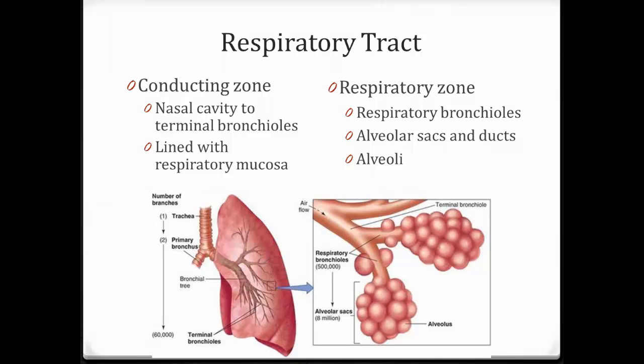We can also divide the respiratory tract into conducting zones versus the respiratory zone. The conducting zone goes from the nasal cavity to the terminal bronchioles. These are lined with respiratory mucosa to build up moisture and trap microorganisms, dust, or other particles. Their job is simply to get air from outside into the lungs, or from the lungs out — they are not involved in gas exchange. The respiratory zone includes the structures where gas exchange takes place: the respiratory bronchioles, alveolar sacs and ducts, and the alveoli.